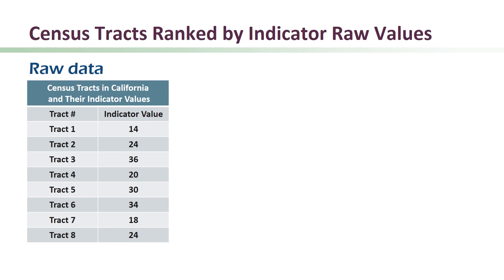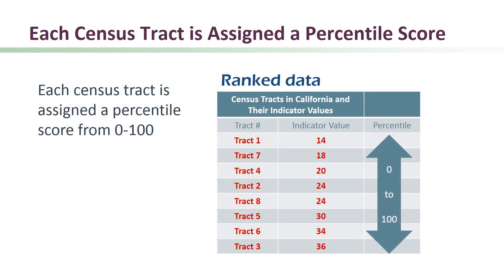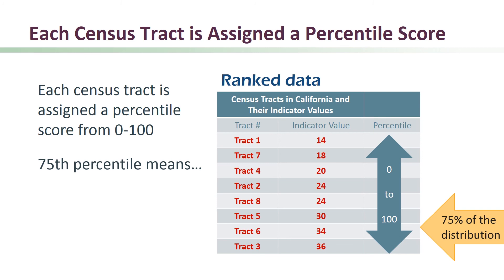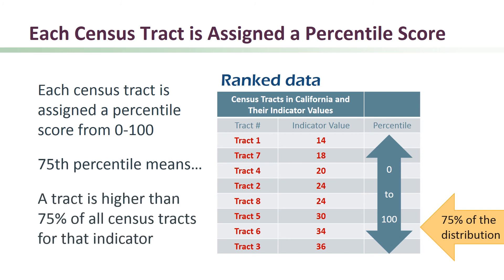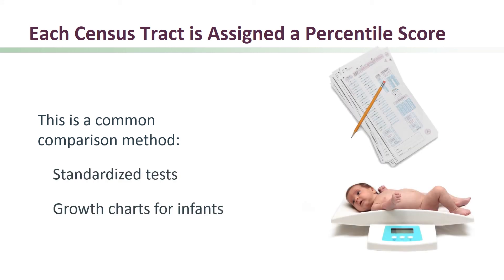For example, we may have ozone concentrations, the number of cleanup sites, or asthma or poverty rates, to name a few. All of the census tracts are then ranked by the raw values for the indicators from lowest to highest. Each census tract is then assigned a percentile score between 0 and 100 based on where the raw value falls in comparison to all other tracts. A 75th percentile means that a tract's score is higher than 75%, or three-quarters, of all census tracts for that indicator. This is a common method of comparison — the same approach frequently used for standardized tests or growth charts for infants.